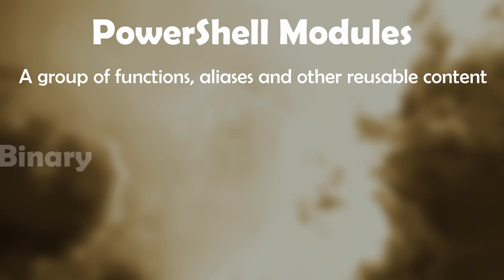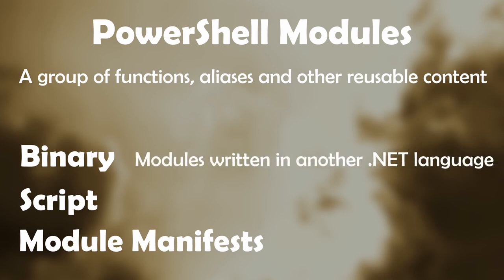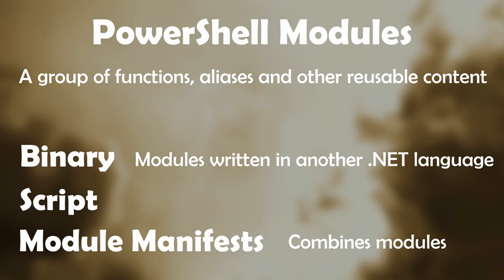There are three types of modules: binary modules, script modules, and module manifests. Binary modules are PowerShell modules written in C# or some other .NET language and compiled into a binary file — just know that they exist and you can use them like other modules. Module manifests don't directly contain any functions or definitions, but rather provide a list of smaller modules to essentially combine together as one. And finally, script modules — these are what we're going to be looking at in this video. A script module is a module created by essentially a PowerShell script.